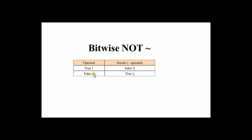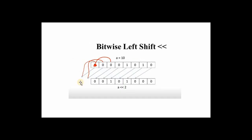The NOT operator is the inverse of the operand. If the operand is true, we get false. The NOT sign is '~'. If our operand is zero, we will get the result true.